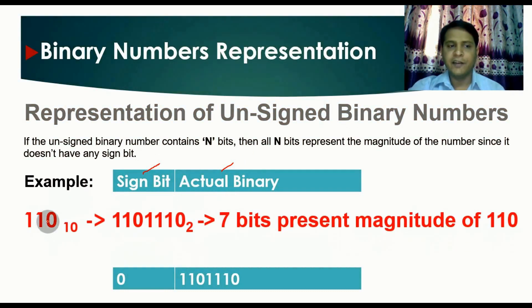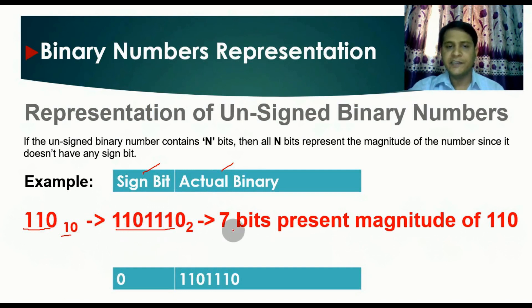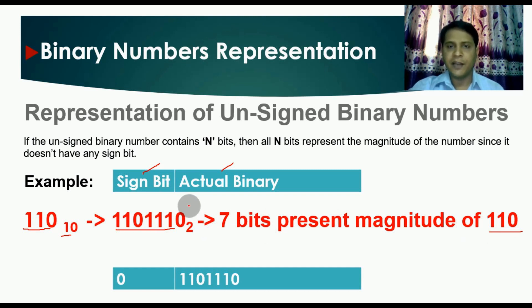Let us consider an example. Say you have the decimal number 110. Its binary equivalent is 1101110 — that is a total of seven bits. All seven bits represent the magnitude of that number, which is the magnitude of 110. If you want to write it in unsigned binary format, you prepend a zero as the sign bit, followed by the seven bits.